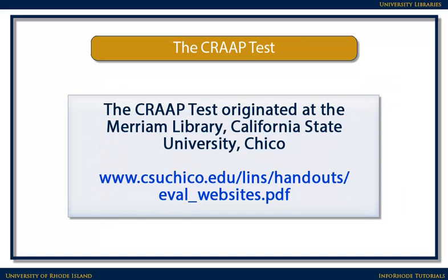Here's a strategy you can use to determine whether something is good for your research. It's called the CRAAP test, with two A's. Each letter stands for something to consider. The CRAAP test originated at the Merriam Library, California State University, Chico, California.